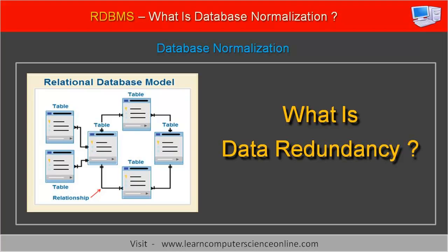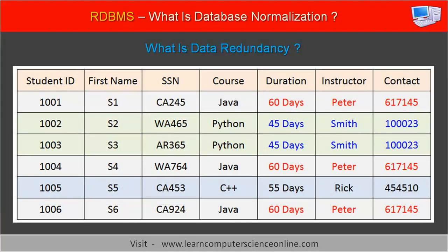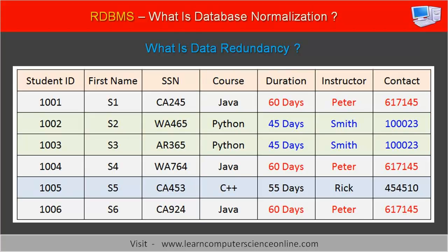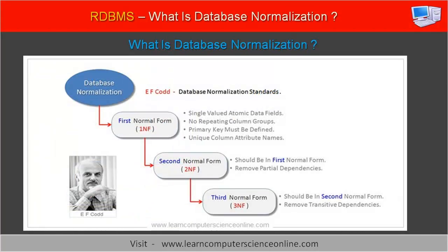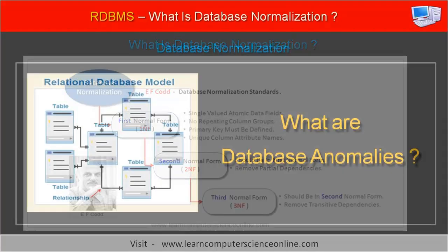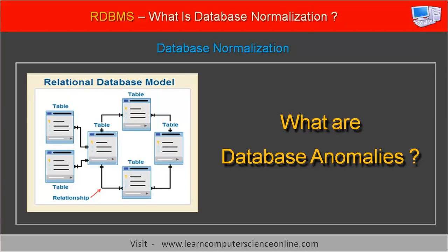Let us first understand the problem of redundant data with one simple example. Consider a student table where this single table stores data related to students, courses enrolled by the students, and instructor details for each course. The problem with this table is the presence of duplicate data in multiple records. For example, the data of courses enrolled by each student and the instructor details are present in multiple records as redundant data. Redundant data is the root cause of many potential problems, and therefore database designers must fix the problem of data redundancy while designing the database. The database normalization process provides a solution to the problem of data redundancy and the database anomalies caused by redundant data in the database tables.